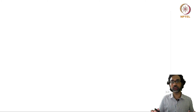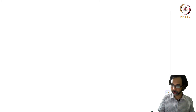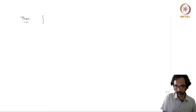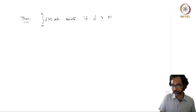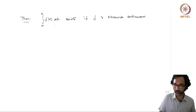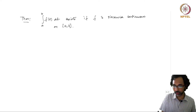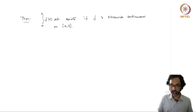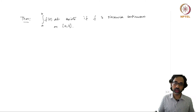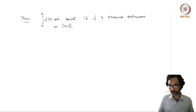Once we know the definition of a piecewise continuous function, we can state a sufficient condition: the integral from a to b of f(t) dt exists if f is piecewise continuous on the interval [a, b]. This gives us sufficient conditions for the existence of Riemann integrals on closed and bounded intervals.